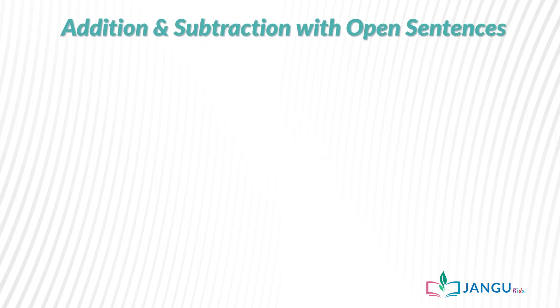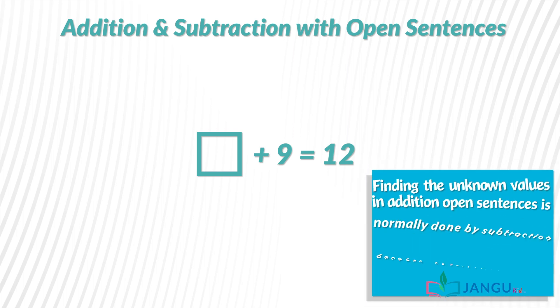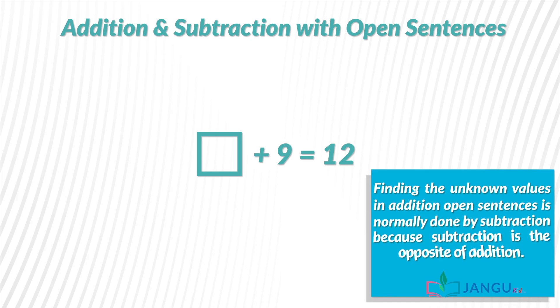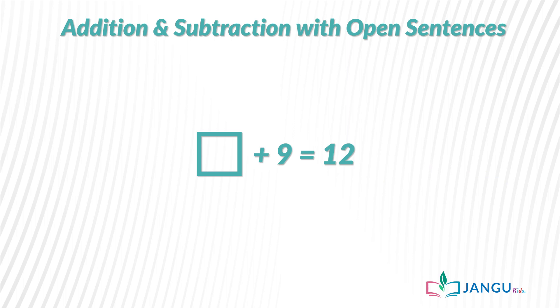Let us begin with addition and subtraction in open sentences. An unknown value plus 9 equals 12. Finding the unknown values in addition open sentences is normally done by subtraction, because subtraction is the opposite of addition. Don't be confused — you will get to understand this statement as we solve examples.